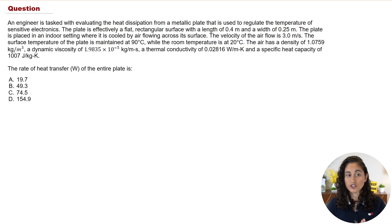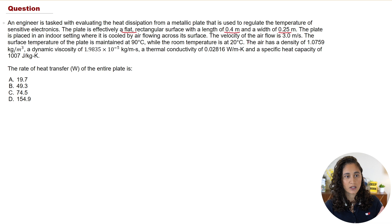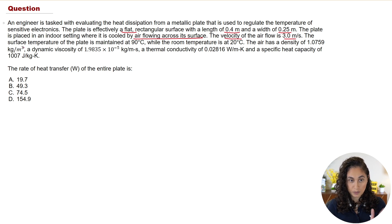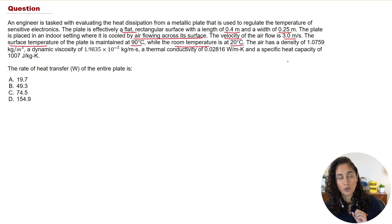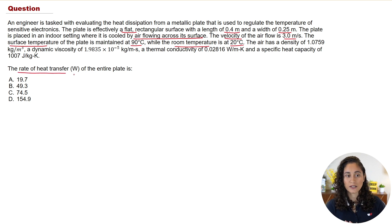An engineer is tasked with evaluating the heat dissipation from a metallic plate used to regulate the temperature of sensitive electronics. The plate is a flat rectangular surface with a length of 0.4 meters and a width of 0.25 meters, placed in an indoor setting cooled by air flowing across its surface. The air flow velocity is 3 m/s, the surface temperature is 90°C, and the room temperature is 20°C. We are given the density, dynamic viscosity, thermal conductivity, and specific heat capacity of the air, and we want to determine the rate of heat transfer from the entire plate.